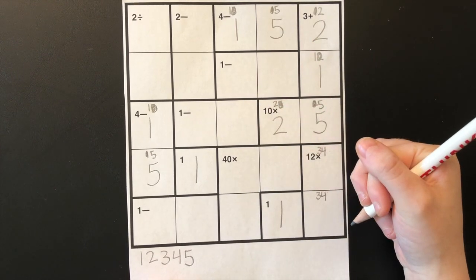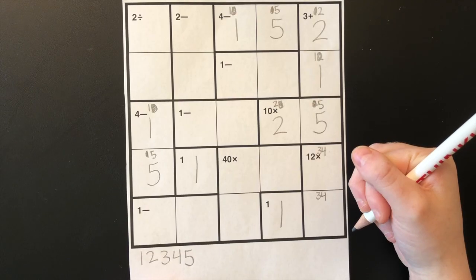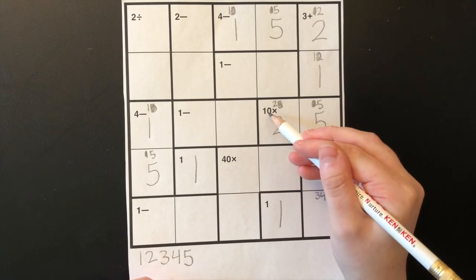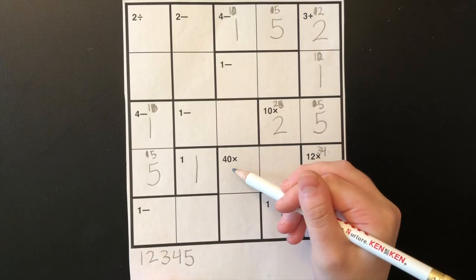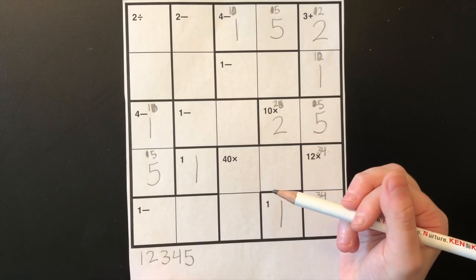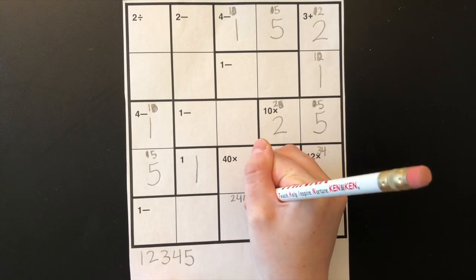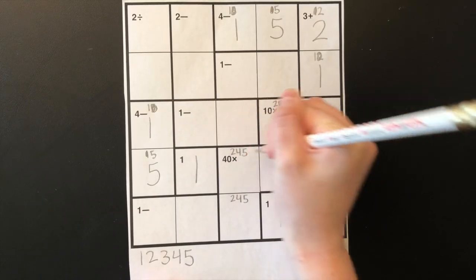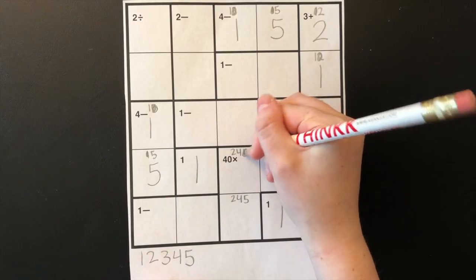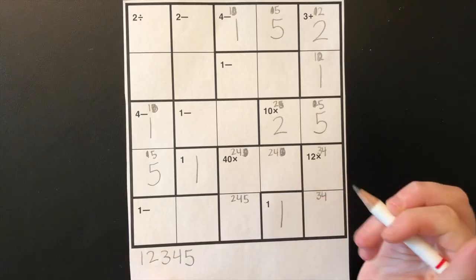Now it's time for step four. In a five by five puzzle, be aware of any multiplication cages that end in a zero or five. Those cages will contain a five because the numbers are multiples of five. So ten times has to have a five — it's five times two. Forty has to have a five, so one of these three boxes has to be a five. Forty divided by five is eight, and two times four is eight, so these three boxes have to be two, four, or five. There's already a five here, so neither of these two boxes can be a five, which means this box has to be a five.